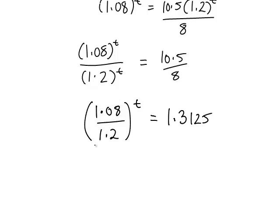And now we can simplify inside the brackets on the left. 1.08 divided by 1.2 is 0.9, so we have 0.9 to the t equals 1.3125. So now that we've done that, it looks more like our first example: an expression to the power of the unknown we're looking for on the left and just a constant number on the right.